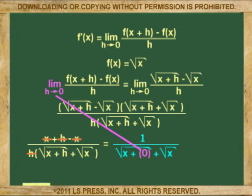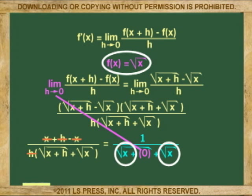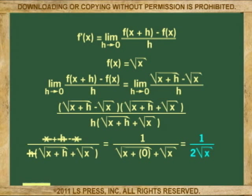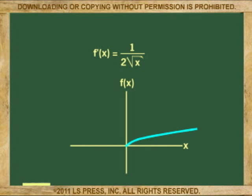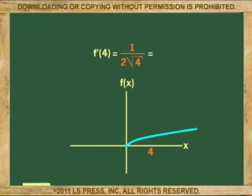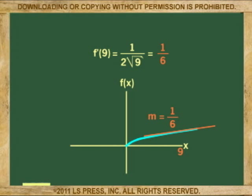We apply the zero limit to h now and add the two radical x's. The derivative of the function of x equals radical x is 1 over 2 radical x. Which means that when x is 1, the slope is 1 over the square root of 1 times 2, or 1 over 2. And when x is 4, the slope is 1 over 2 times the square root of 4, or 1 over 4. And when x is 9, the slope is 1 over 2 times the square root of 9, or 1 over 6. And so on.